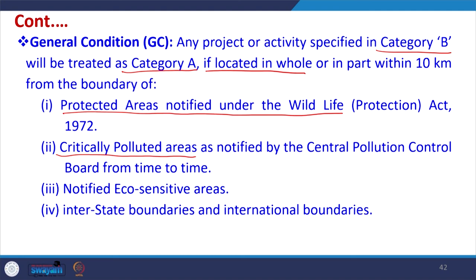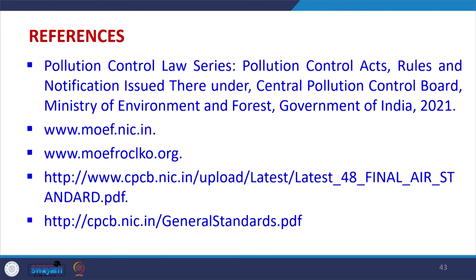Category B projects in eco-sensitive areas, near interstate boundaries, or near international boundaries also have mandatory EIA. From all these things, we understand that EIA, environmental pollution control, and maintaining environmental conditions are very important, with water pollution and wastewater treatment being a key part of this, which we will begin learning in the next few lectures.